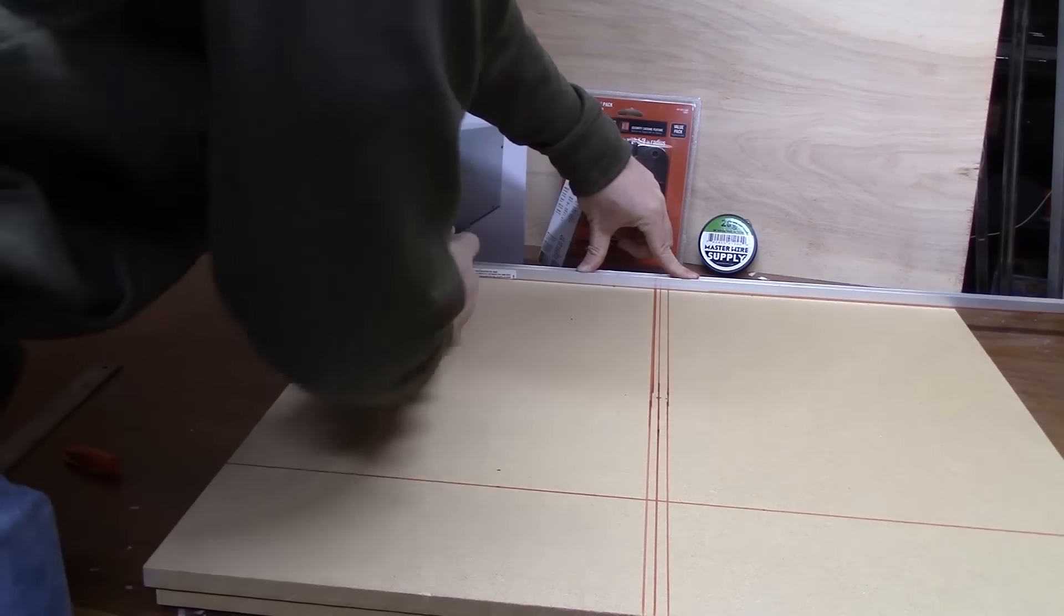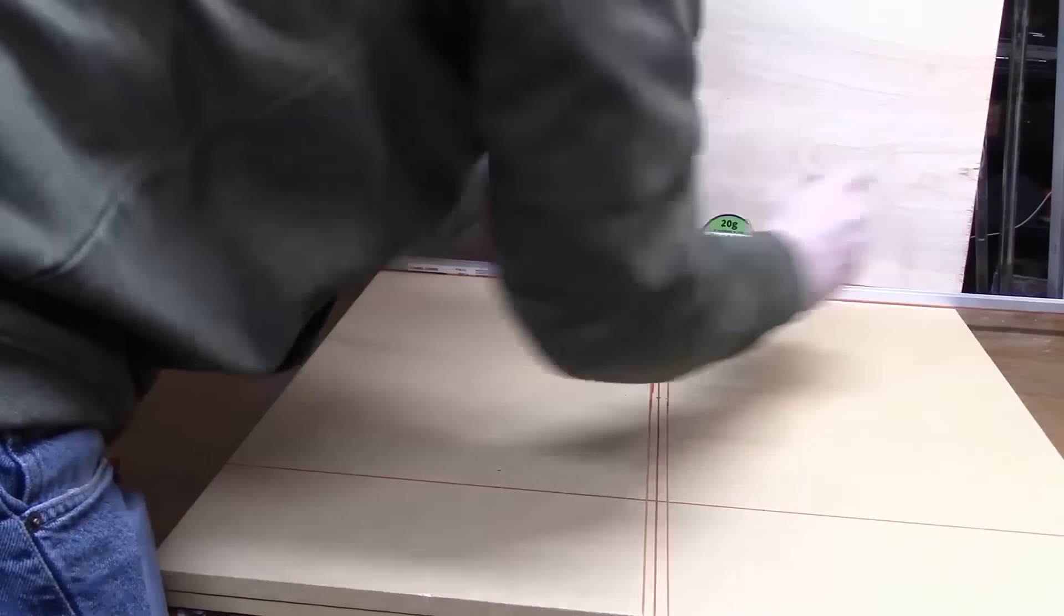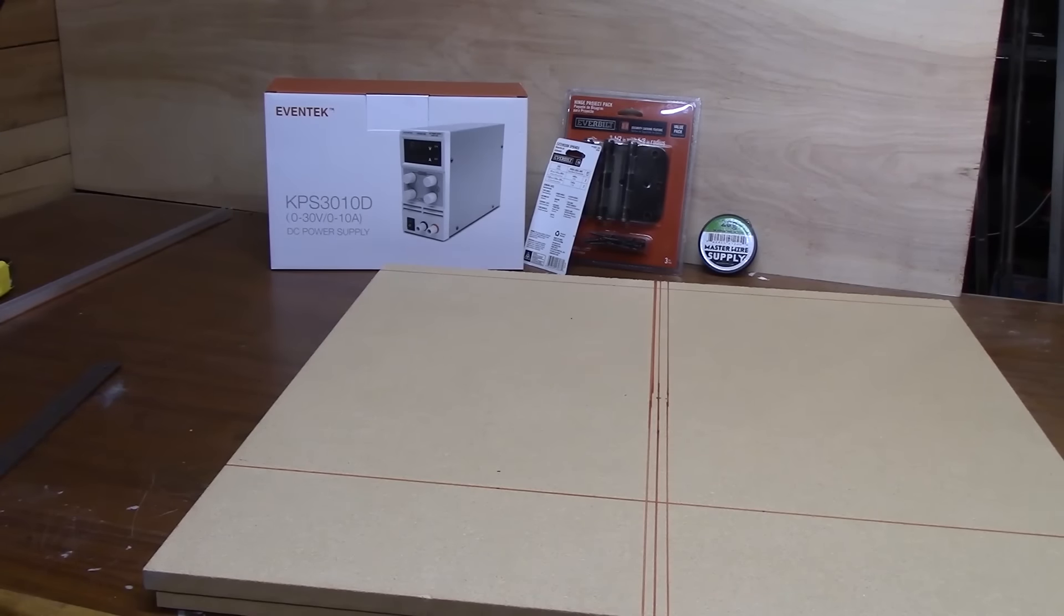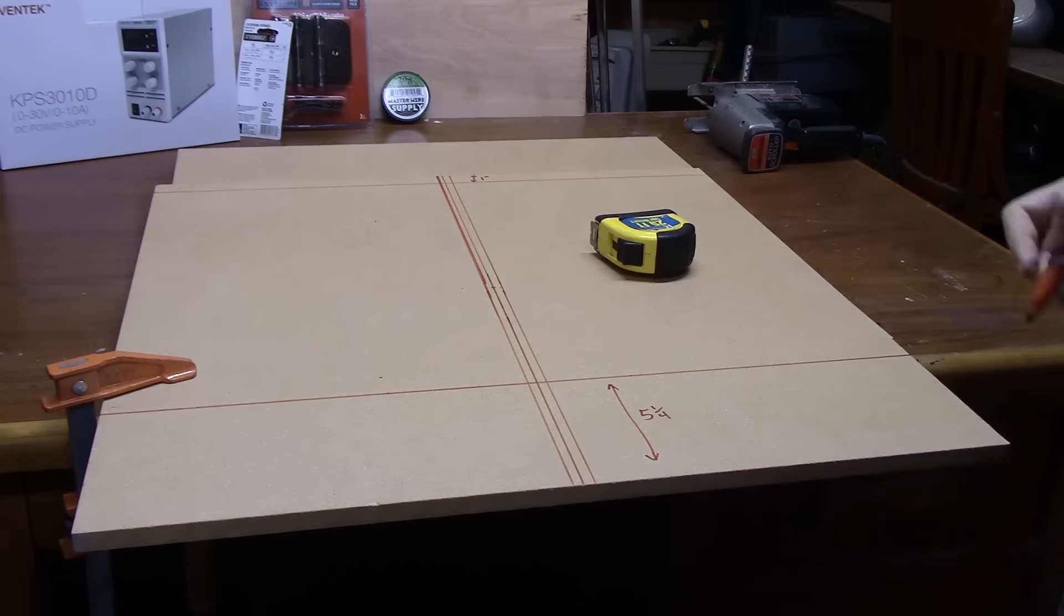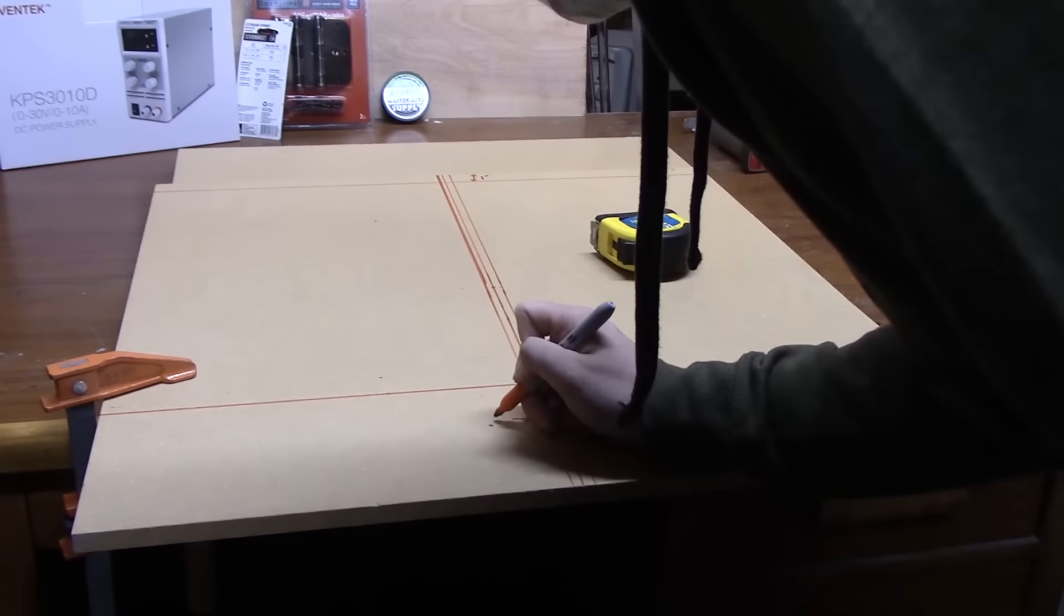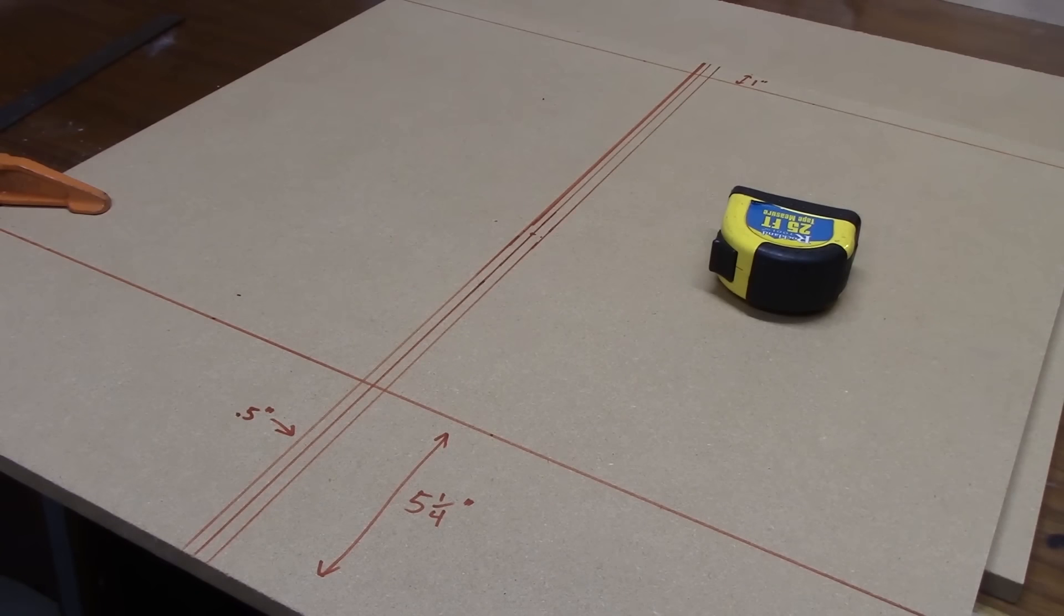I'm starting with two pieces of MDF, and they're basically just two feet by two feet, but this isn't an exact science. You can get bigger or smaller pieces of wood or MDF or whatever you want to use, but I feel like two feet by two feet is a pretty good size.